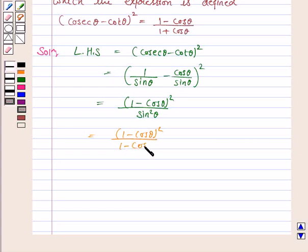This is equal to 1 minus cos theta whole square upon sin square theta, which can be written as 1 minus cos square theta. Again this is equal to 1 minus cos theta whole square upon 1 minus cos square theta, which can be written as 1 minus cos theta into 1 plus cos theta.